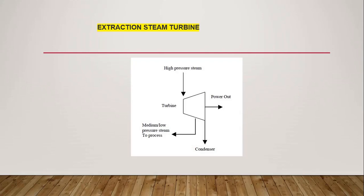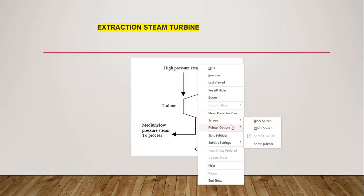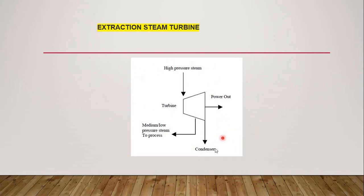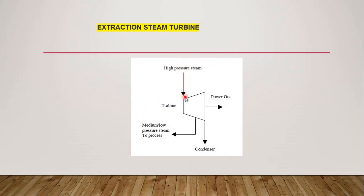In this picture here, with a laser pointer, you can see this is the extraction steam turbine design. What happens here is that this turbine basically contains two outlets. The steam comes in, but steam goes out from two ways — one is going to the condenser and one is going to the process. Steam is coming inside, it is rotating the blades, the turbine is rotating. One outlet connects with the condenser, another outlet is the extraction of low pressure steam to the process. This type of design is called the extraction steam turbine — one inlet and two outlets.